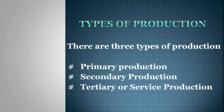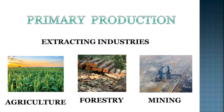Types of production. There are three types of production: primary production, secondary production, and tertiary or service production. Primary production is carried out by extractive industries like agriculture, forestry, fishing, mining, and oil extraction. These industries are engaged in activities such as extracting the gifts of nature from the earth's surface.